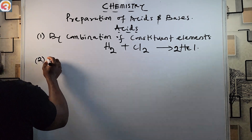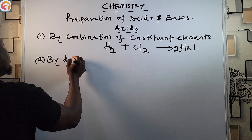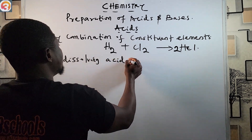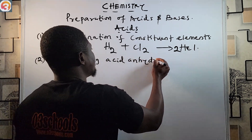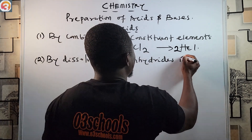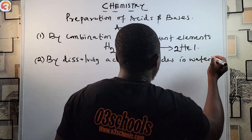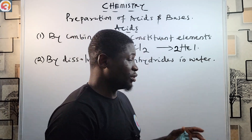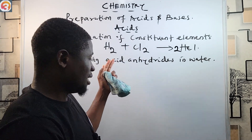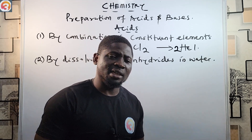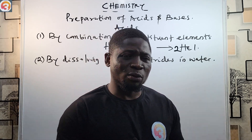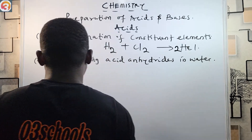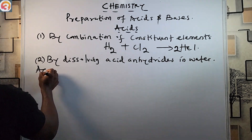Another method for preparing acid is by dissolving acid anhydrides in water. Acid anhydrides are molecules that are capable of forming acid solutions.